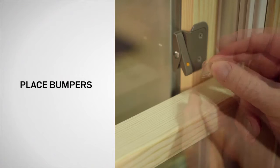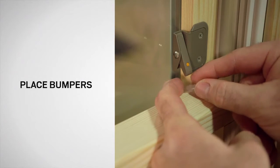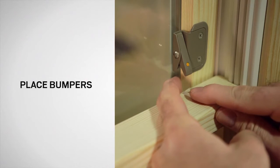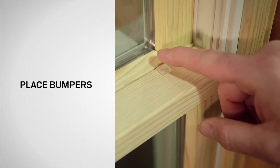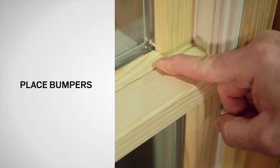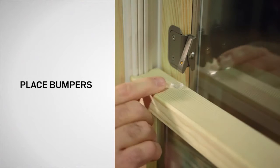Remove the bumper liner and place the bumper directly under the window opening control device, flush with the back edge of the top rail of the bottom sash. Lower the sash and apply firm pressure to the bumper for five seconds to adhere the bumper to the sash. Repeat for the opposite side.